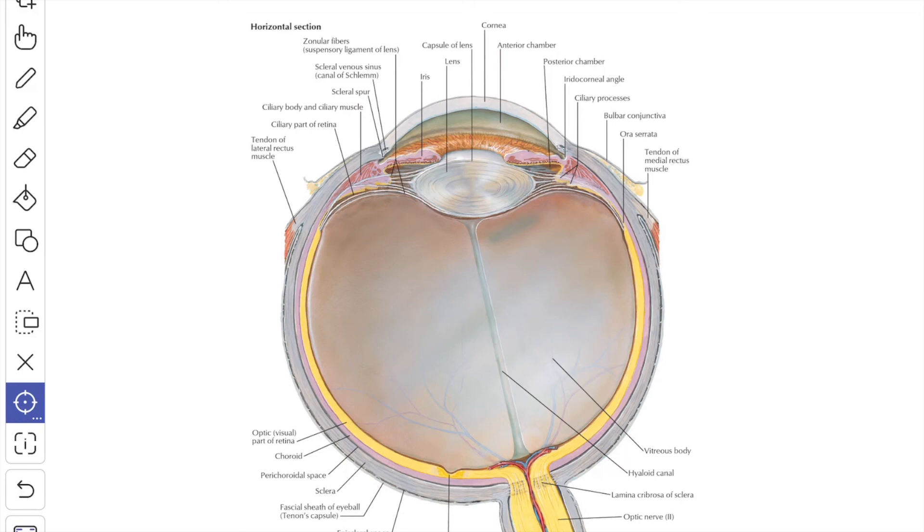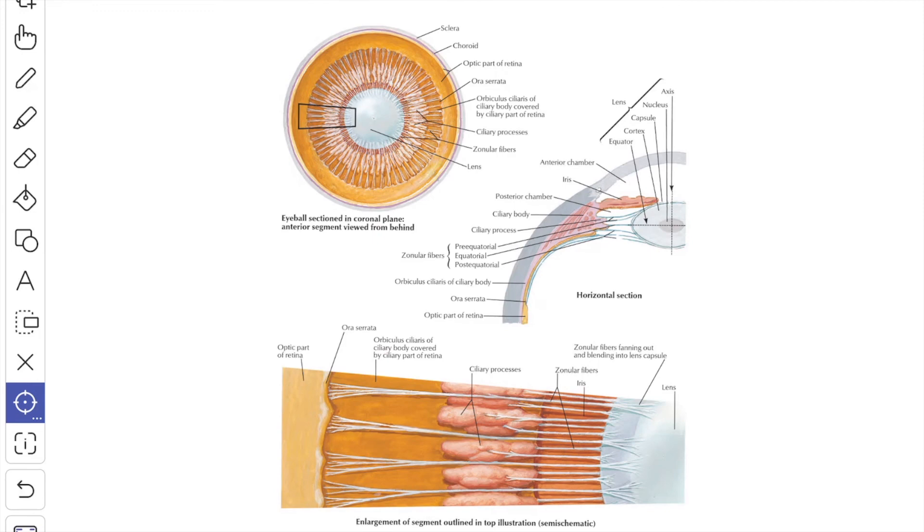The vitreous body is enveloped by the hyaloid membrane which is attached to the ciliary epithelium, the ciliary processes, and to the margin of the optic disc. In front of the ora serrata, the hyaloid membrane is thickened by the introduction of radial fibers to form the ciliary zonule.